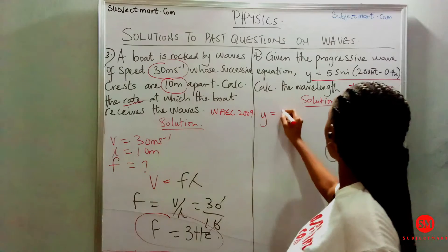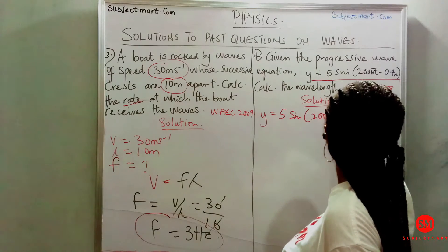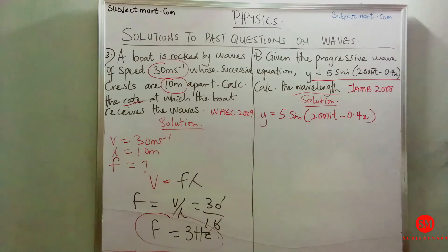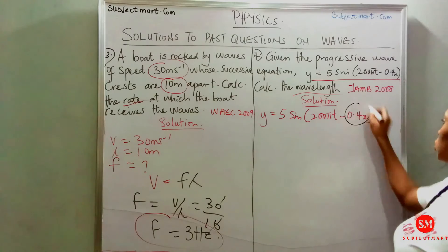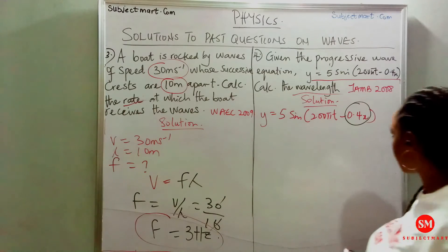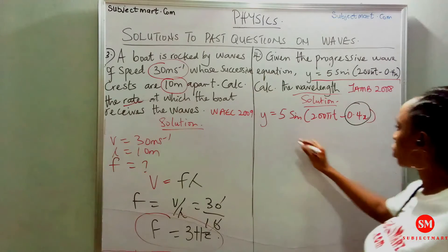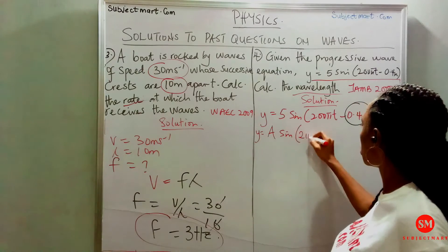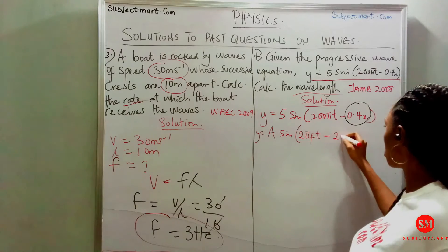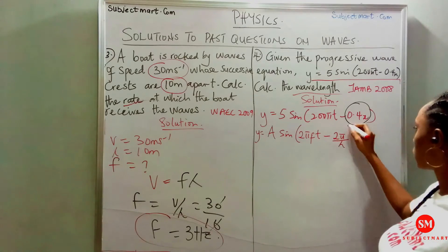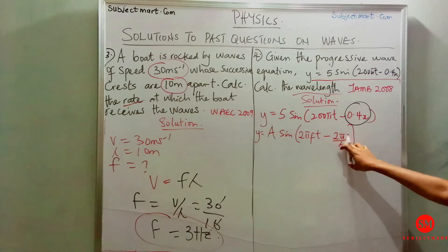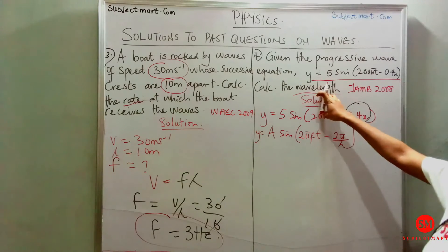The fourth question gives us a progressive wave equation and asks us to find the wavelength. What we do is compare this with the standard wave equation: y equals A sine of (2π ft minus 2π over lambda times x). Looking at this equation, the term that carries lambda is the one we need to focus on to find the wavelength.